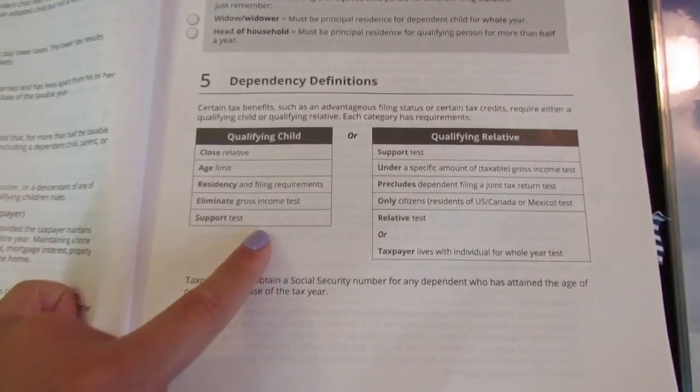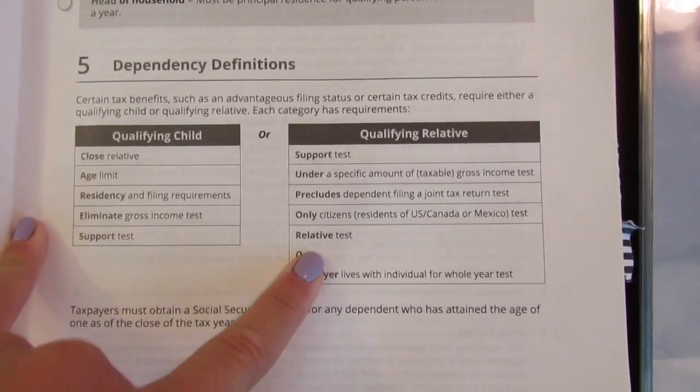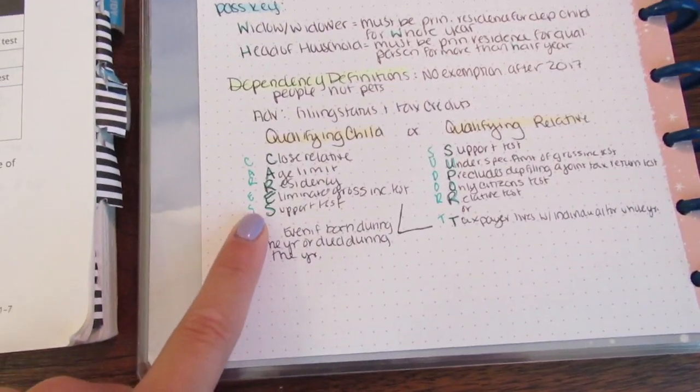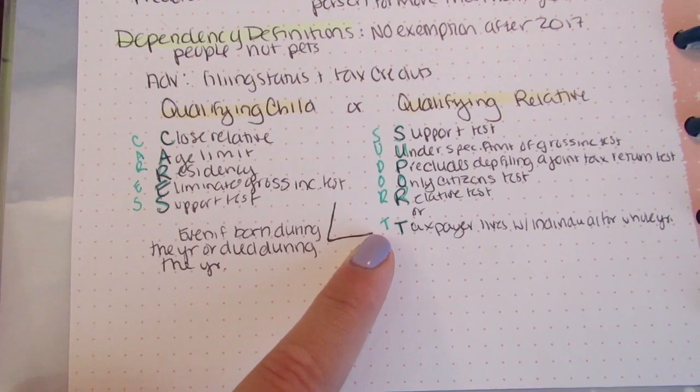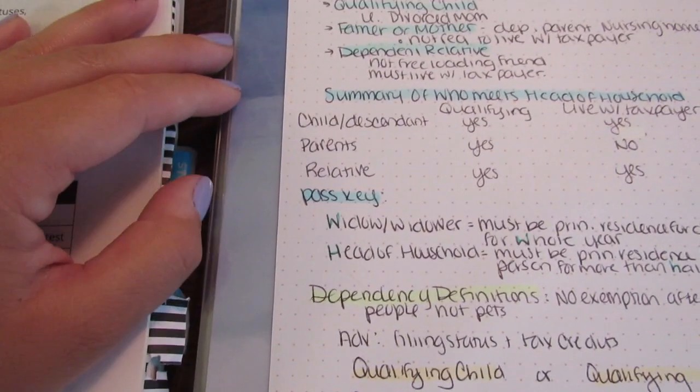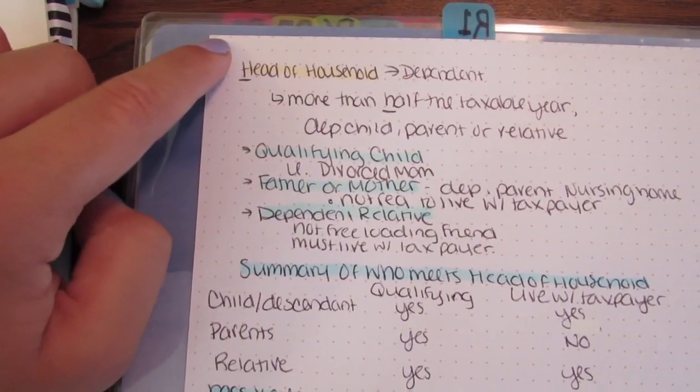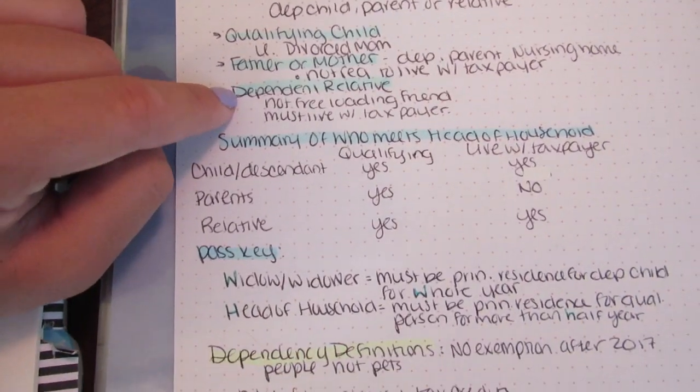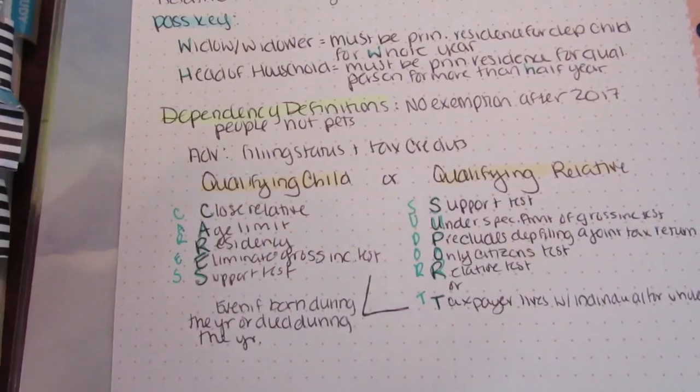So this right here are the acronyms, we have CARES and support. So right here I have CARES and support and I use that green sharpie fineliner pen that I was discussing before. And since this is all under that filing status heading I use the orange for head of household, blue for the separate paragraphs under head of household just to further help me understand.